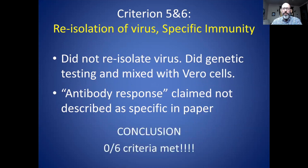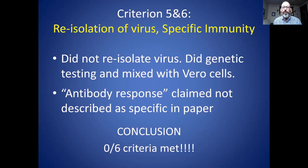In conclusion, they met zero of the six criteria. There are several misrepresentations in that article: the title says they satisfied Koch's postulates, but the second paragraph says they used Rivers' revision, which is distinct. They claimed four papers satisfied the first three criteria, but upon closer examination, not one criterion in any of those papers was satisfied. They then claimed to satisfy the remaining three criteria, but upon closer examination of their procedures, they did not satisfy any of them. I would consider this a fraudulent paper, because they cannot provide any evidence to back up any of the claims they made. It is very, very misleading.